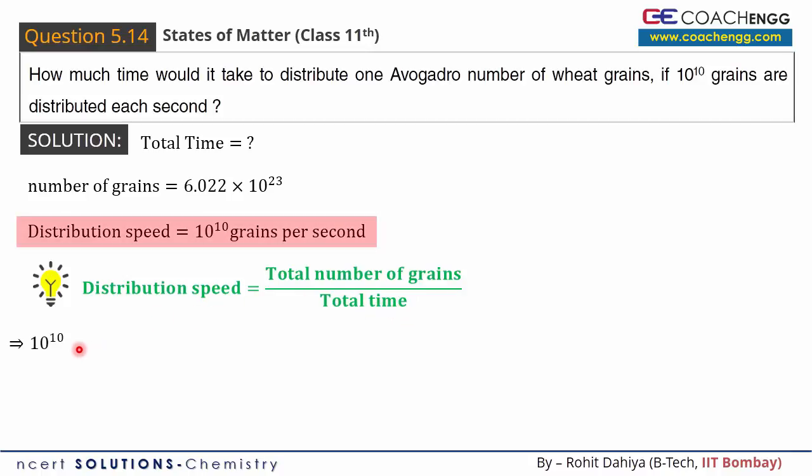Distribution speed is given as 10^10. The total number of grains is one Avogadro number, which is 6.022 × 10^23, divided by total time, which we need to find.